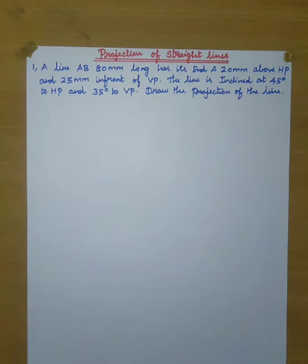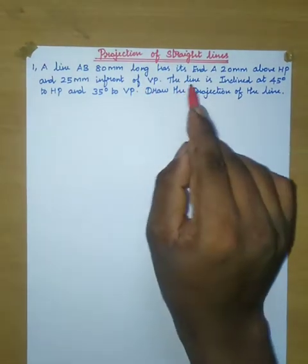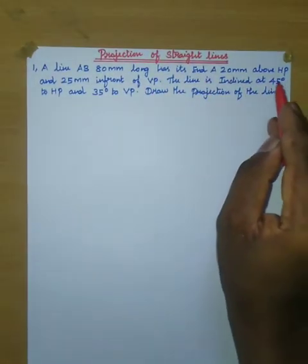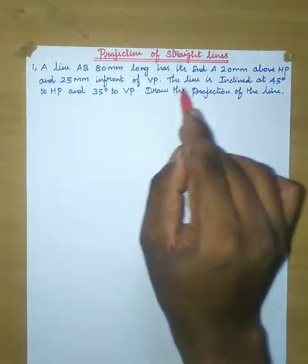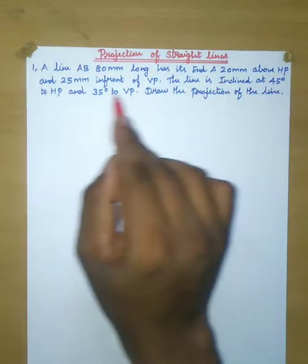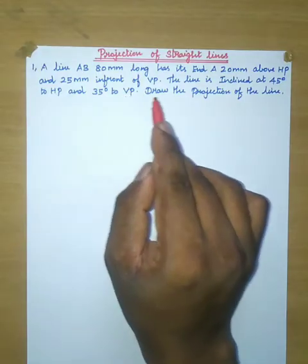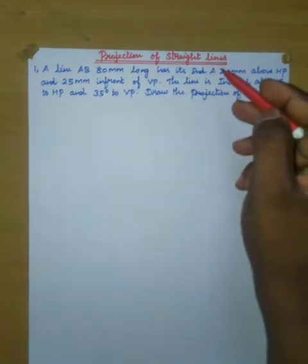Hello everyone, welcome to Jazz Talks. In this video we are going to see how to draw the projection of a straight line in engineering drawing. First, read the question: a line AB, 80mm long, has end A 20mm above HP and 25mm in front of VP. The line is inclined at 45 degrees to HP and 35 degrees to VP. Draw the projection of the line.